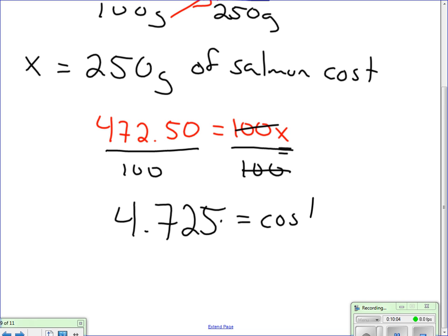And when we take 472.50 and we divide it by 100, we get 4.725. And that equals my cost. Now, if I want to actually put this into a price, I'm going to round that. So, it's going to cost $4.73 to buy 250 grams.